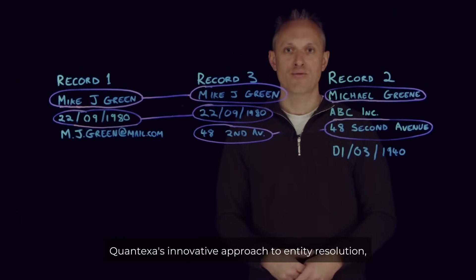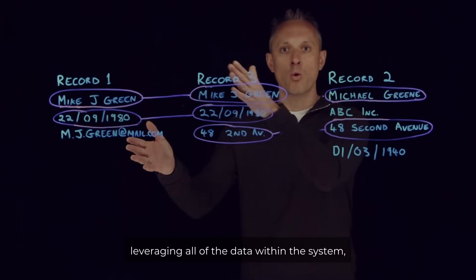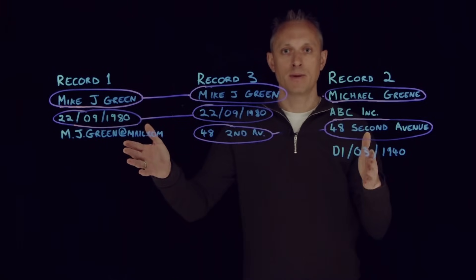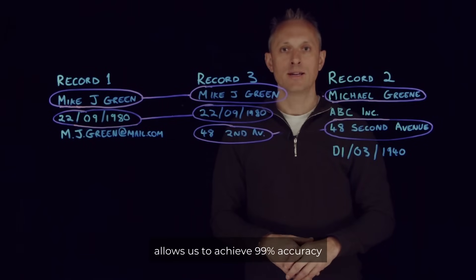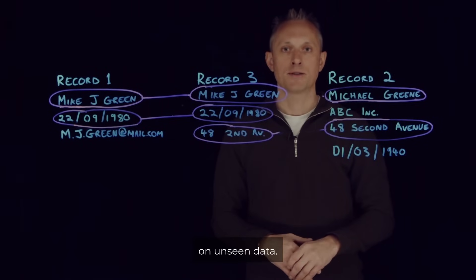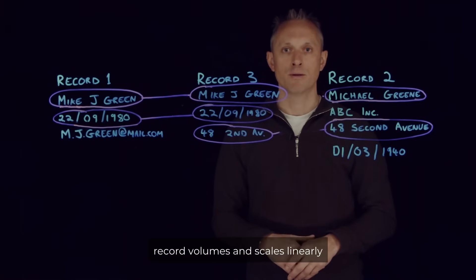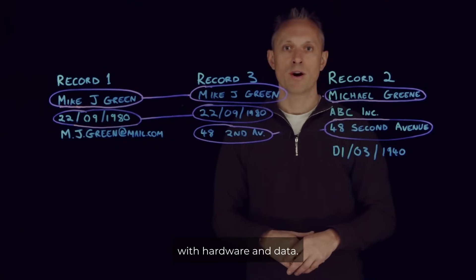Quantexa's innovative approach to entity resolution, leveraging all of the data within the system, allows us to achieve 99% accuracy on unseen data. It also scales to 60 billion-plus record volumes and scales linearly with hardware and data.